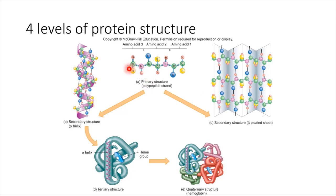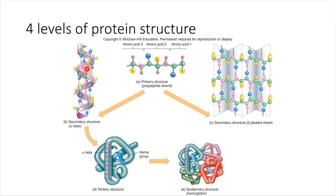We start with a primary sequence and then, depending on whether the amino acid side groups attract each other or repel each other, that's going to push this chain locally into having one of these two conformations — either a helix or a beta pleated sheet.